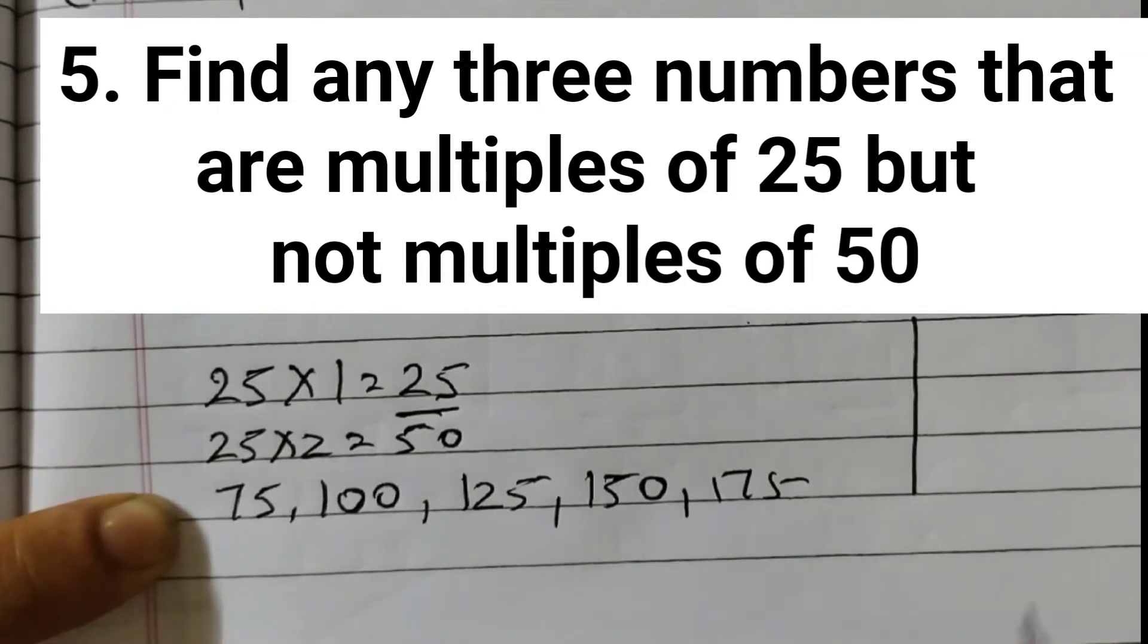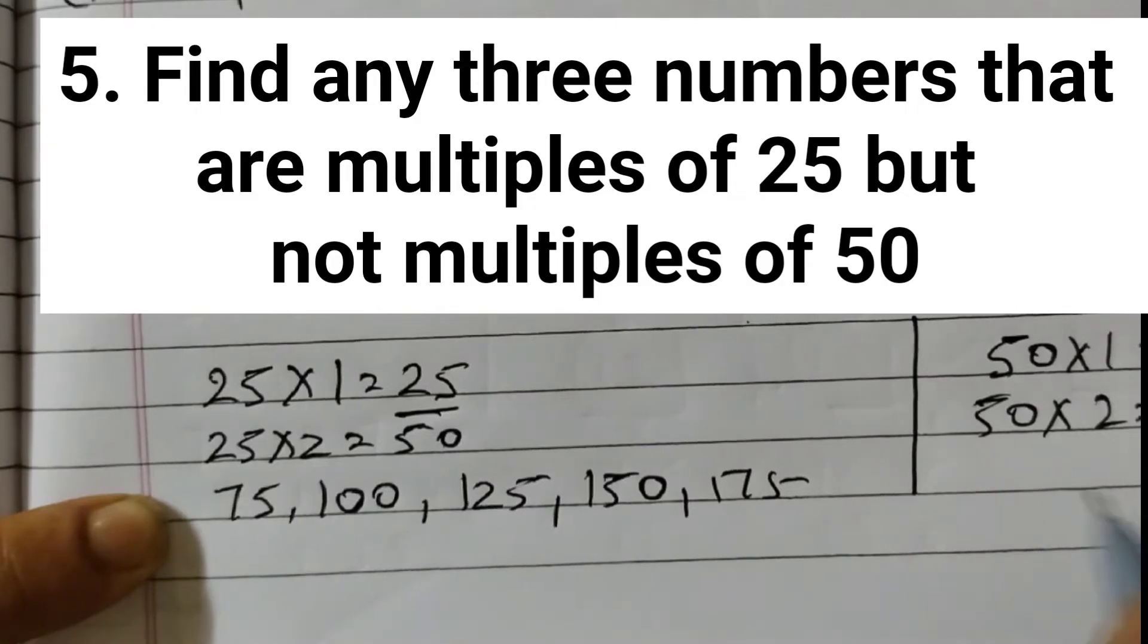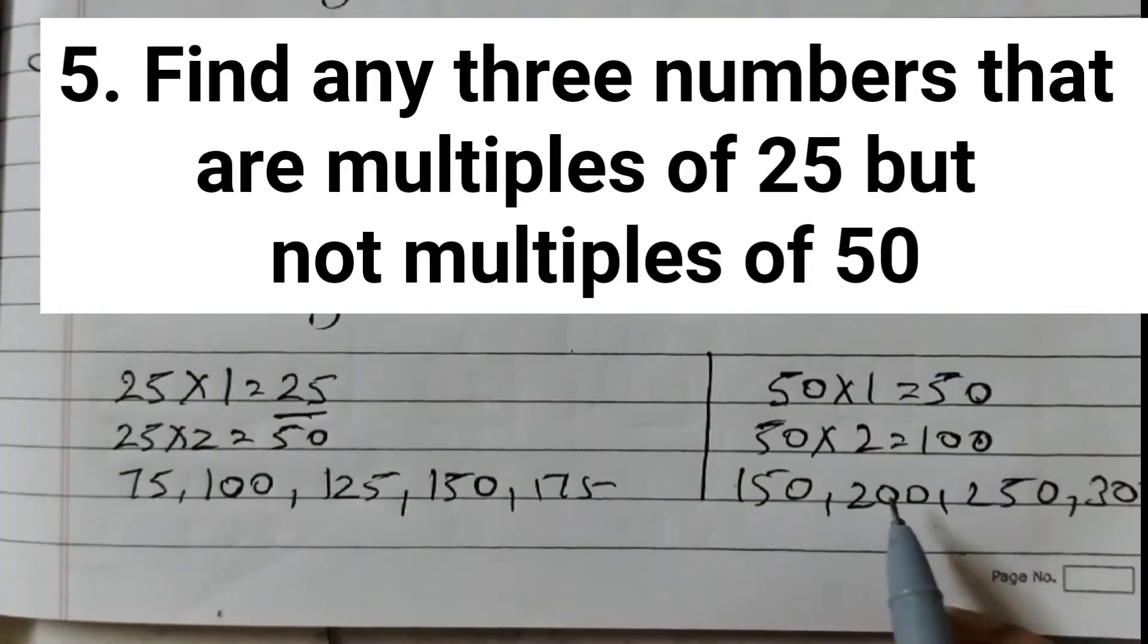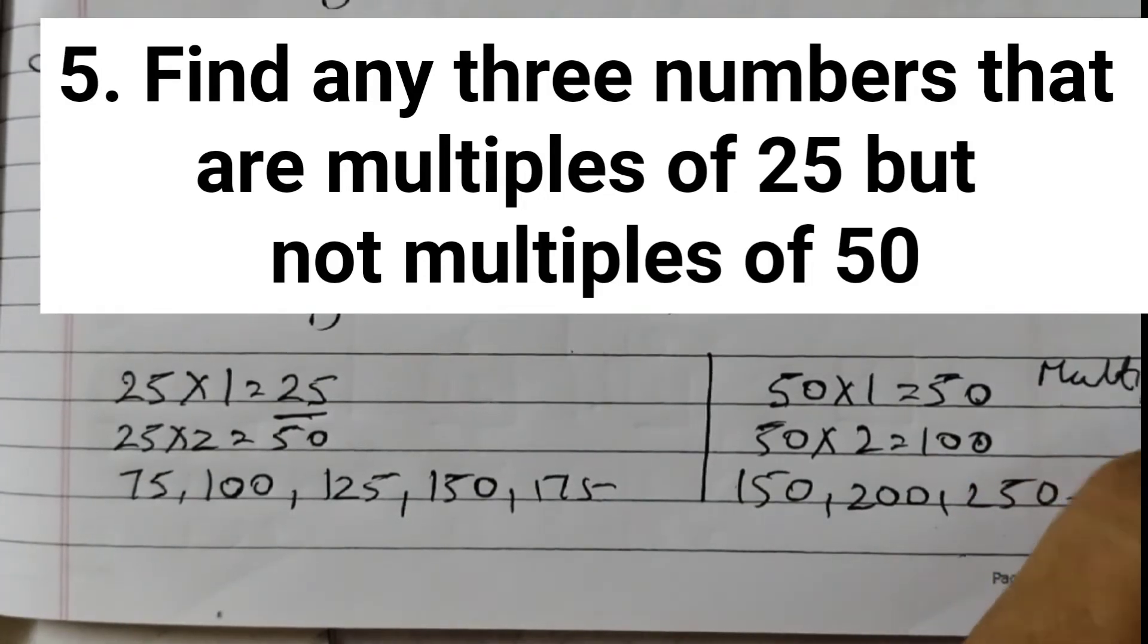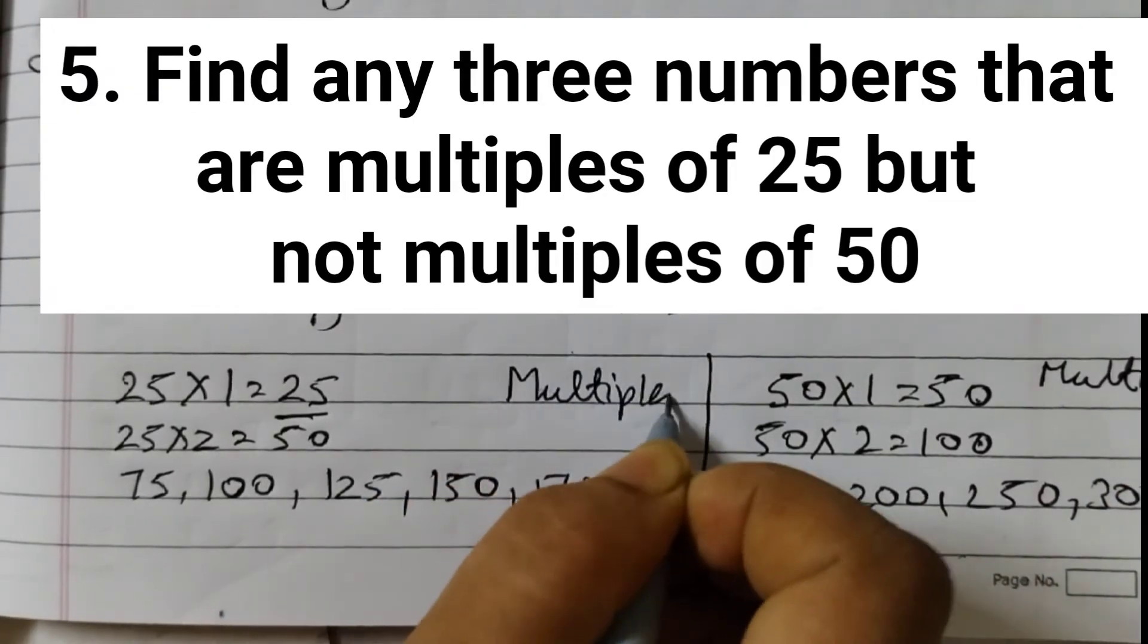And then the multiples of 50, same way you can find out: 5 ones are 50, 5 twos are 100, and then you go on adding 50. So 50 plus 50 is 100, 100 plus 50 is 150, then 200, 250, 300. These are the multiples of 50. These are the multiples of 25.